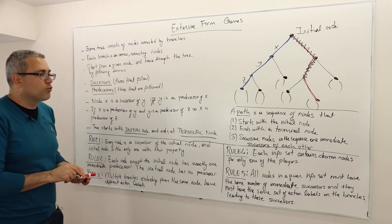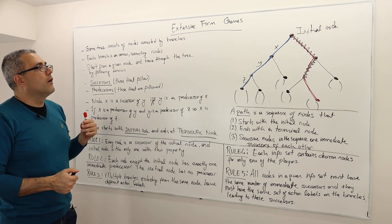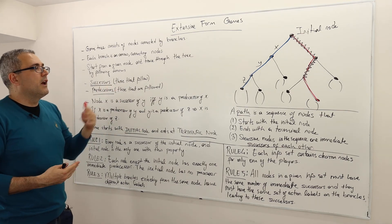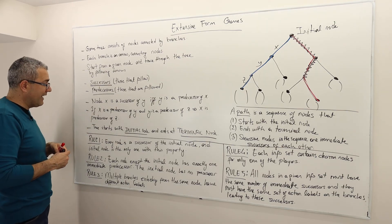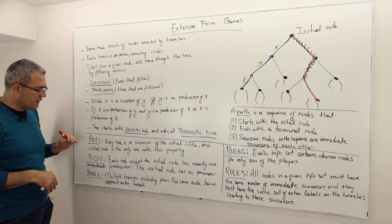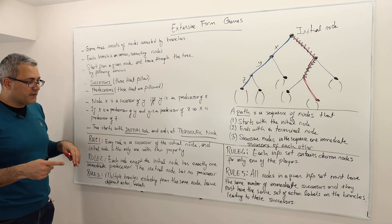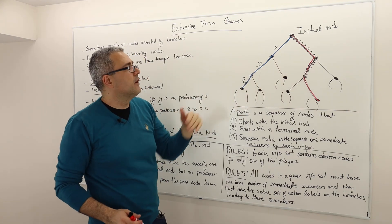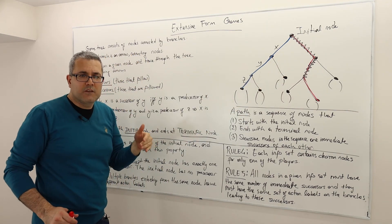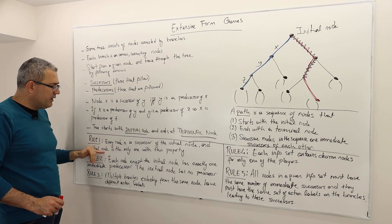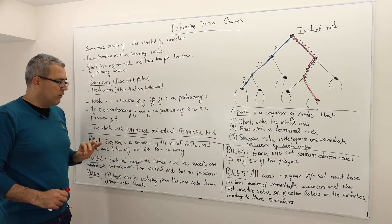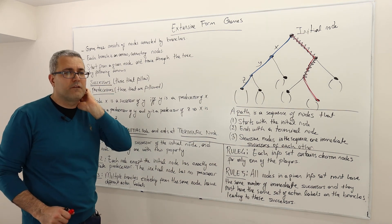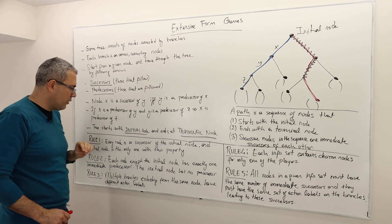Now let's talk about rules — what are the rules for nodes and branches to satisfy and fulfill the concept of a game tree? Rule number one: every node is a successor of the initial node. It doesn't have to be an immediate successor, but a successor nevertheless. And the initial node is the only node with this property — the initial node is not a successor of anything else.